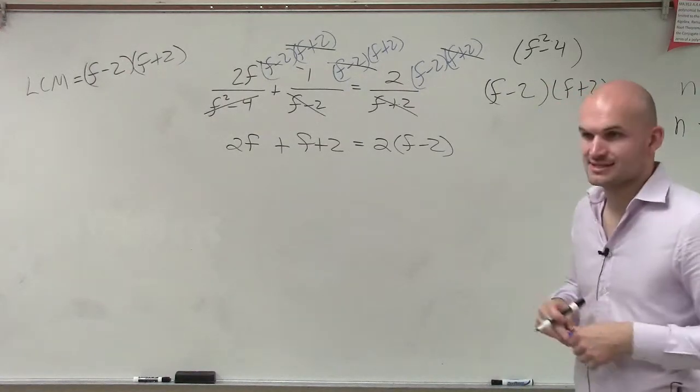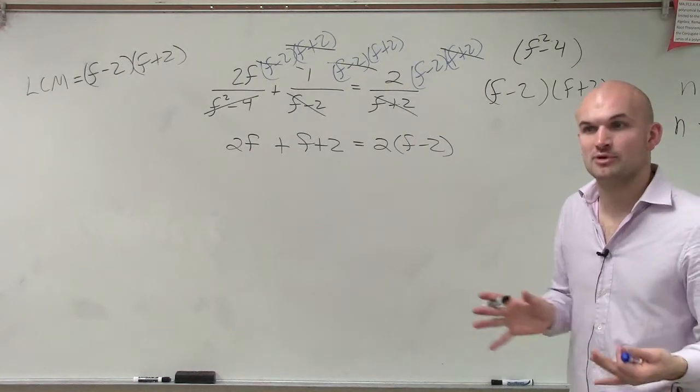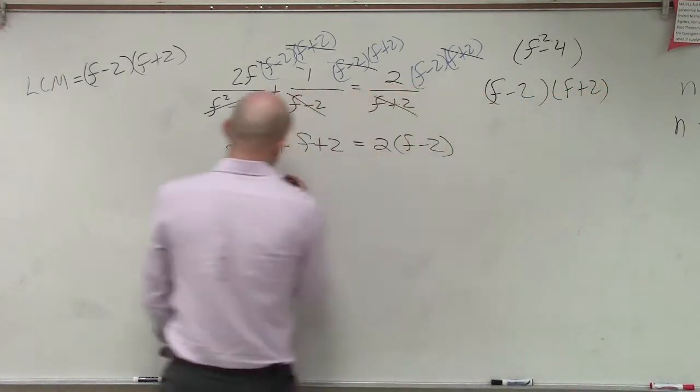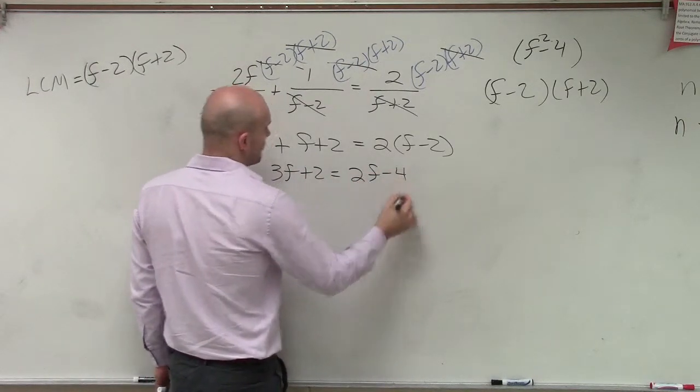Now, we notice that this is a linear equation, so I need to combine like terms and then get my variable on the same side. So here, I have 3f plus 2 equals 2f minus 4.